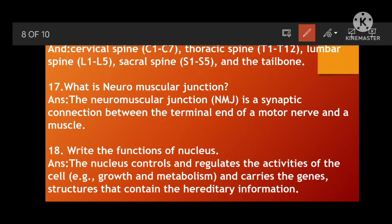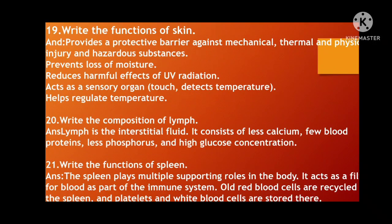Next: What is the neuromuscular junction? The neuromuscular junction (NMJ) is the synaptic connection between the terminal end of a motor nerve and the muscle — such as cardiac muscle or skeletal muscle. Then: write the function of the nucleus. The nucleus controls and regulates the activities of the cell, including cell growth and cell metabolism. It carries the genes — the structures that contain hereditary information — and mainly oversees the synthesis of DNA and transfer of genetic materials.